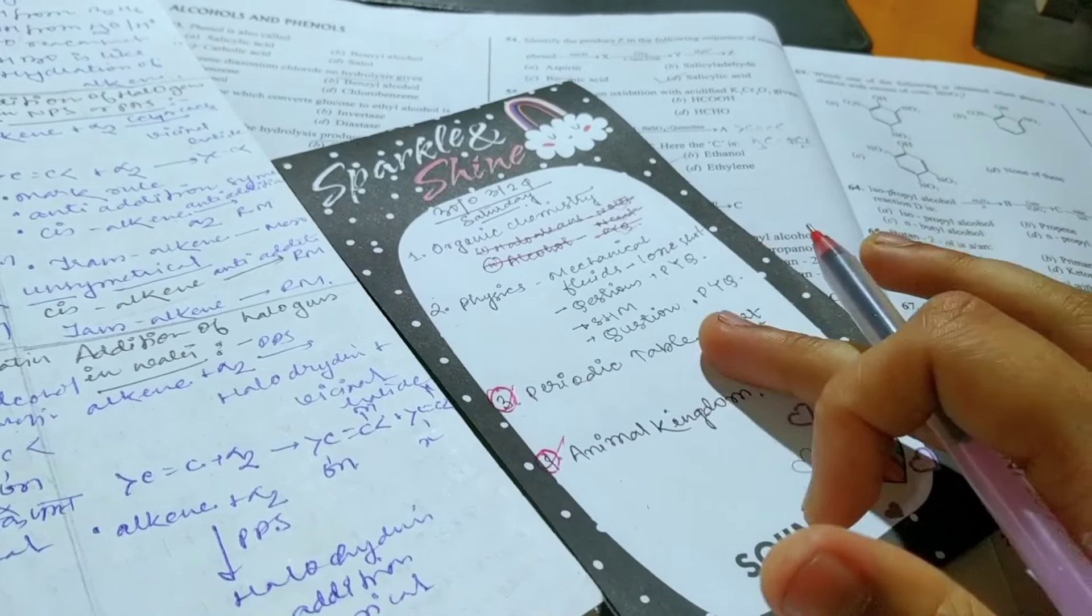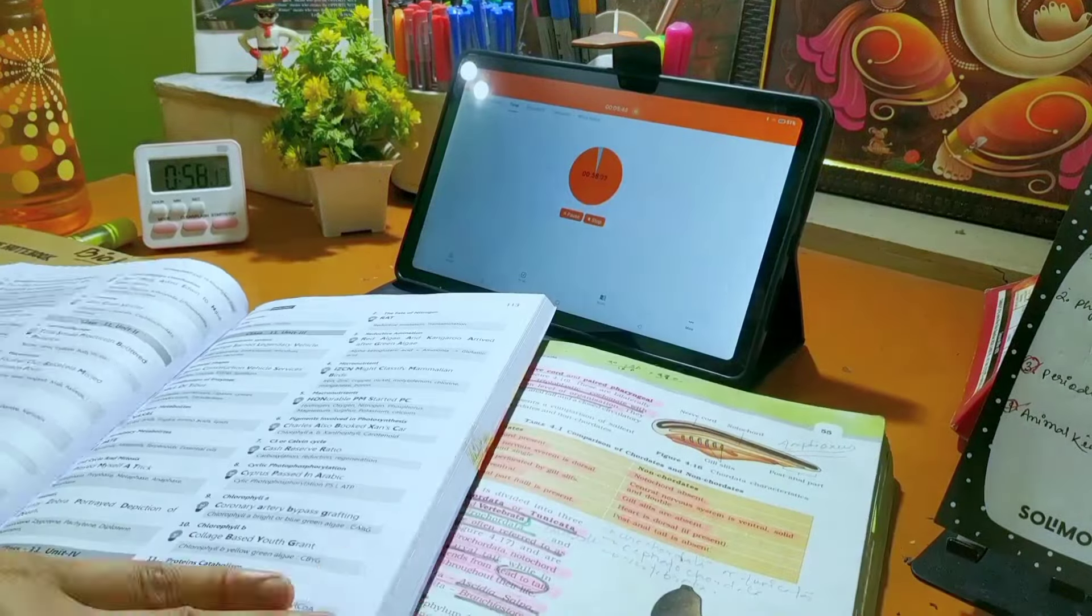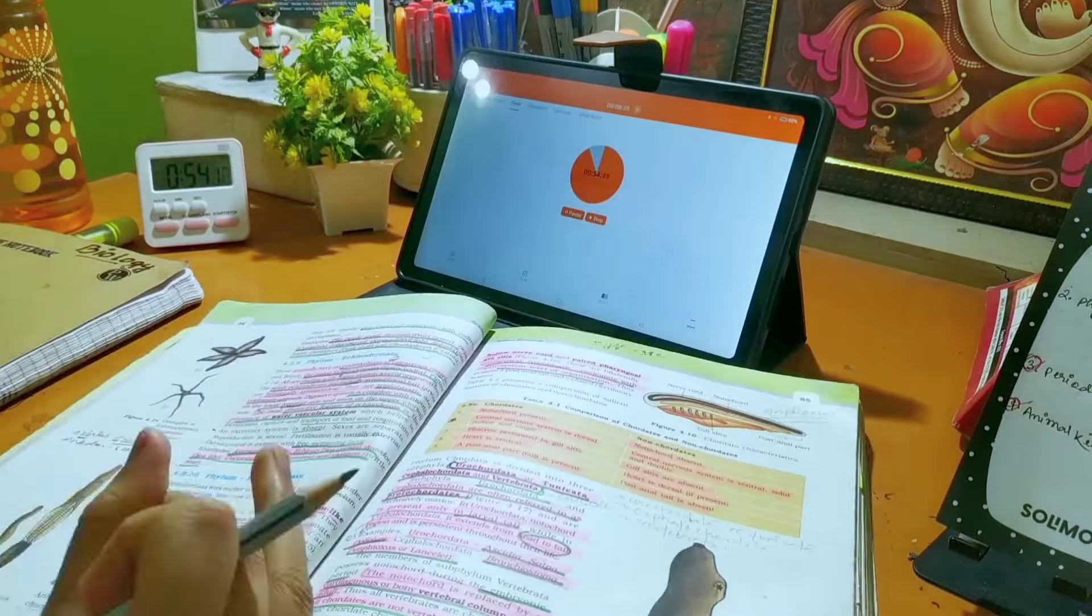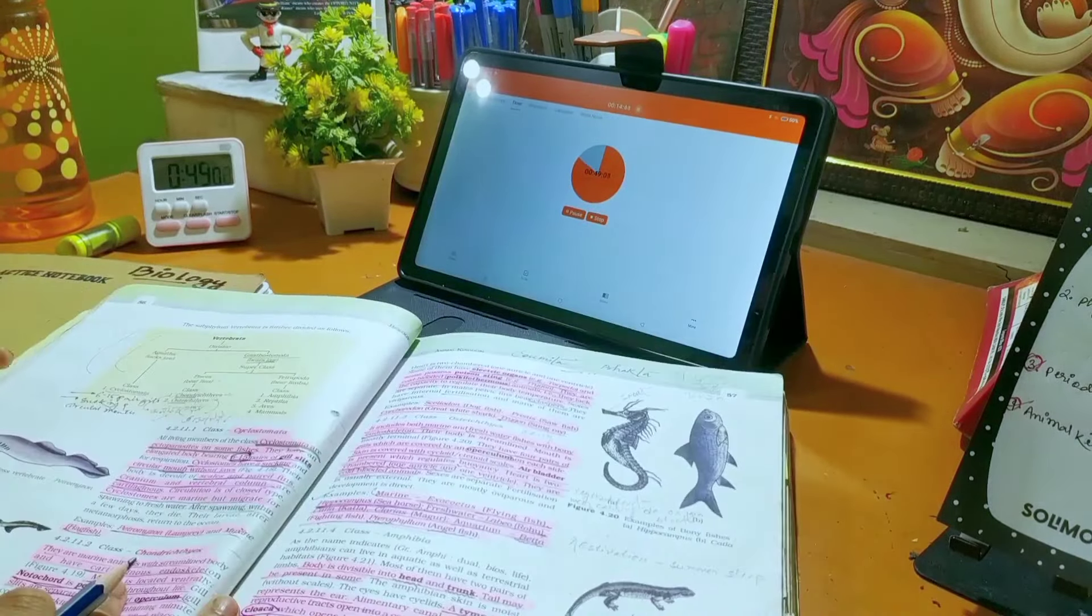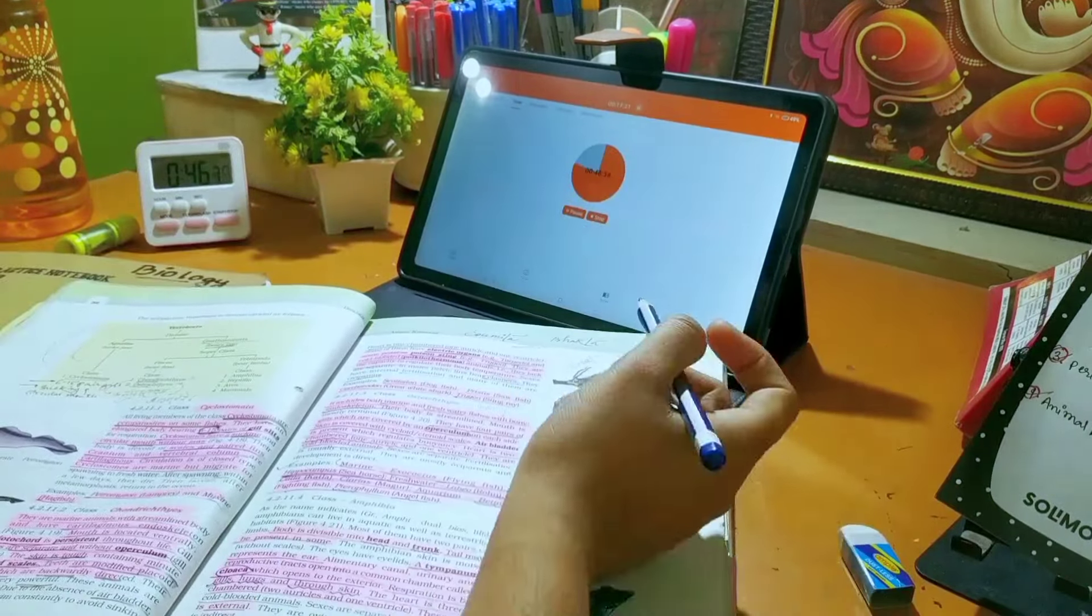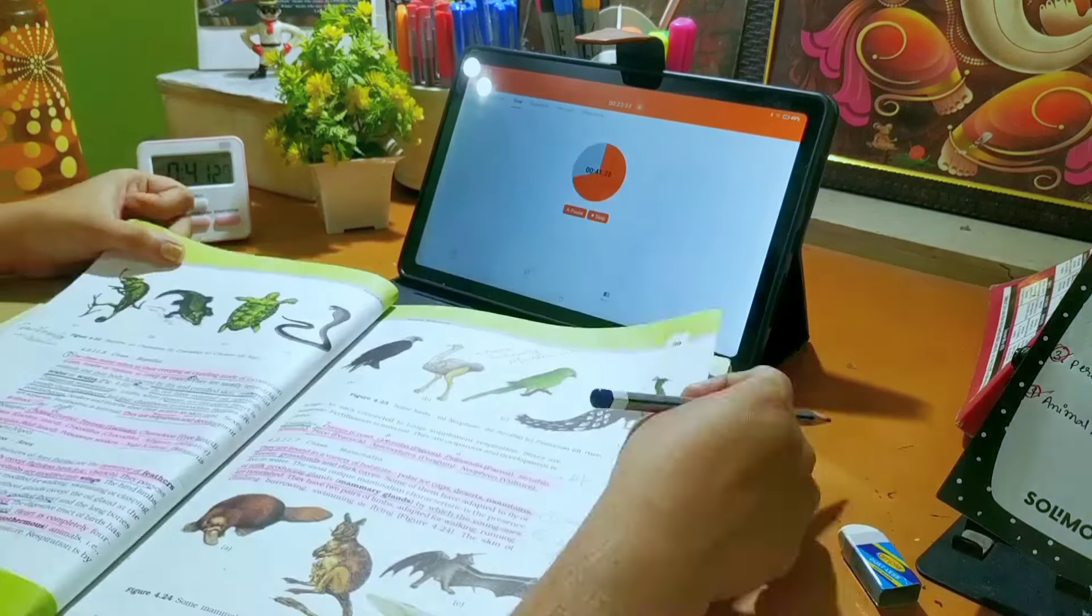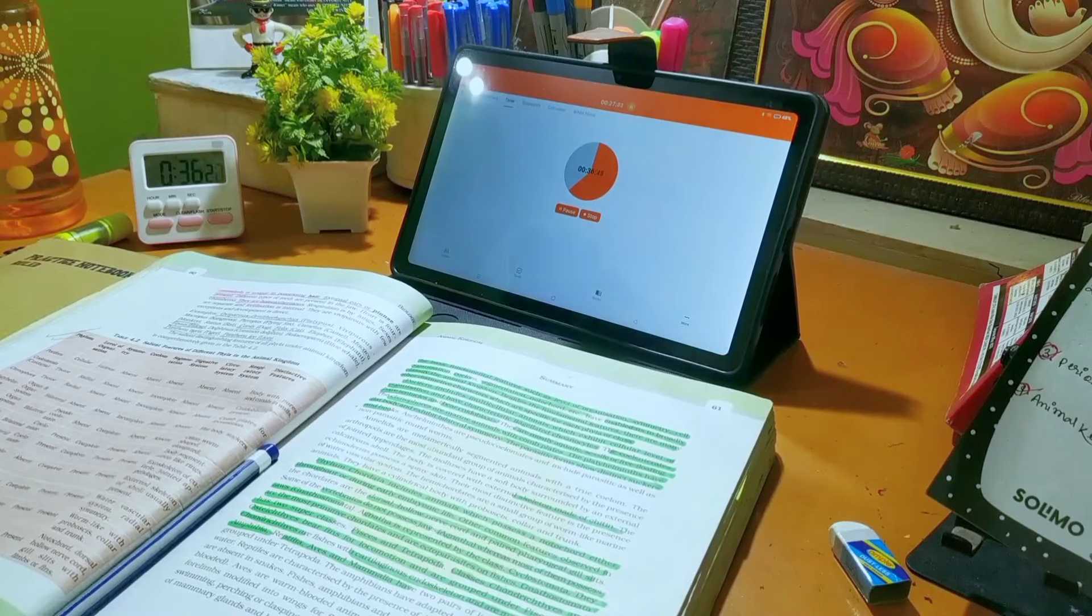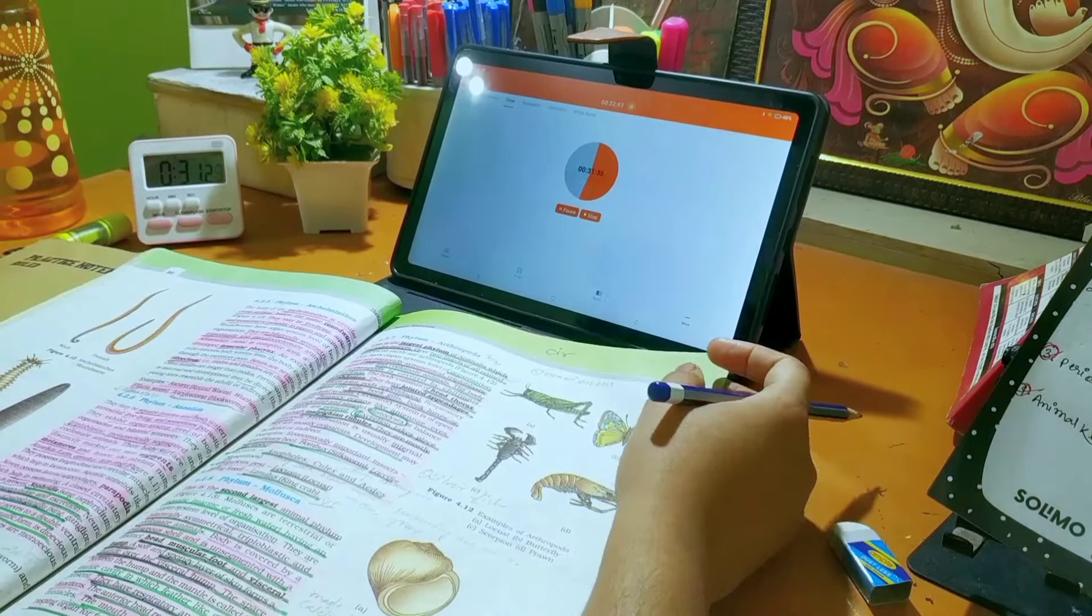After having my dinner, I started with biology. In bio, whenever I study, I start from the last two pages. Because when I start from the last two pages, I feel like I finish this chapter quickly. I don't get much focus on the last two pages especially, so I try starting from the last two pages so that my concentration is good on that topic.